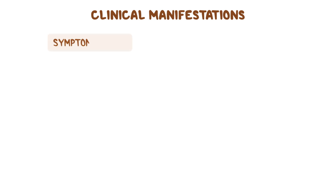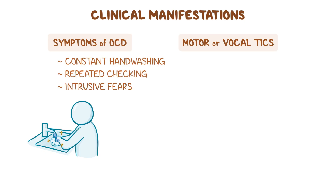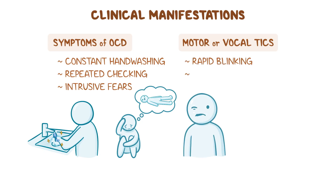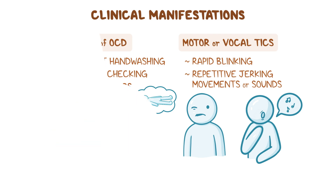The hallmark manifestations of PANDAS are symptoms of obsessive-compulsive disorder, or OCD, and motor or vocal tics. OCD might look like constant handwashing, repeated checking, or intrusive fears that the child can't dismiss, like a sudden overwhelming worry that their family could get hurt if they don't perform a specific routine. Tics can be as subtle as rapid blinking, or as obvious as repetitive jerking movements or sounds.